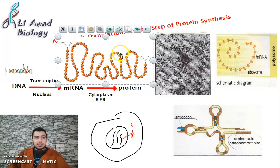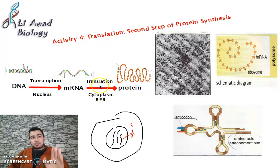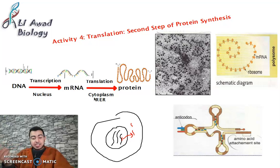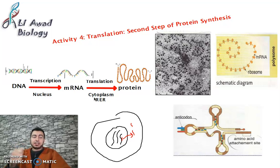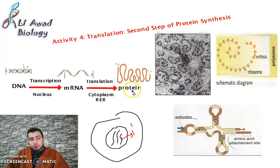Proteins are made up of amino acids — each circle represents one amino acid. In this video, we are going to explain translation. Translation is the process of translating mRNA into proteins, and it takes place in the cytoplasm.